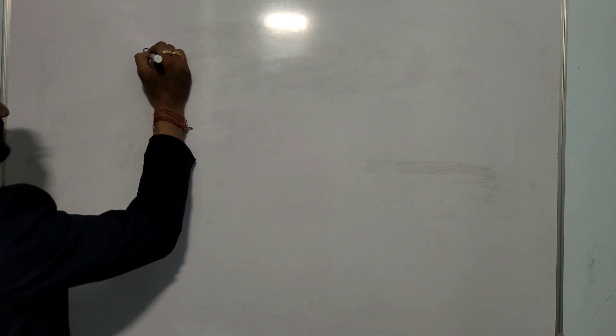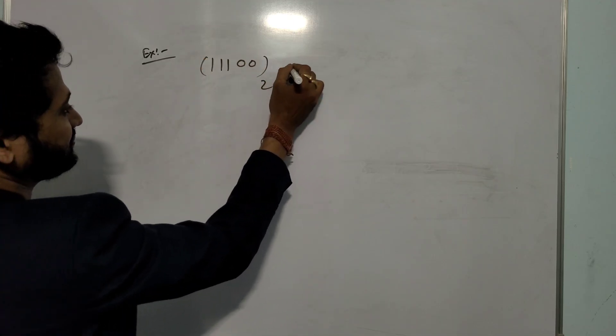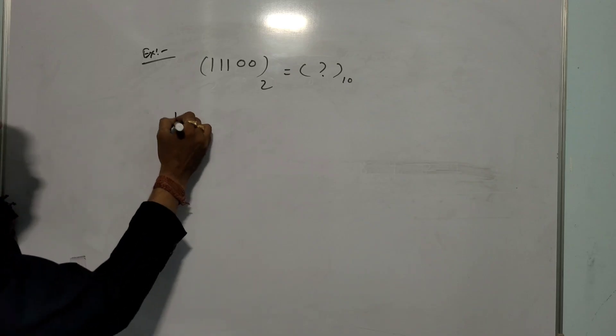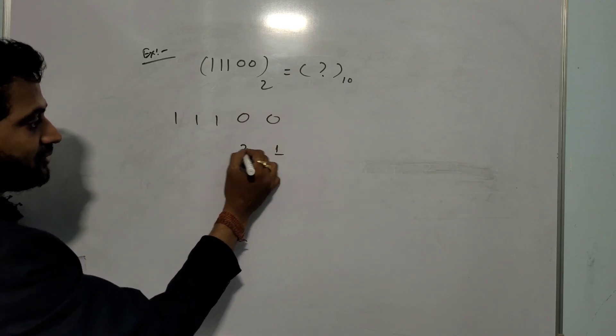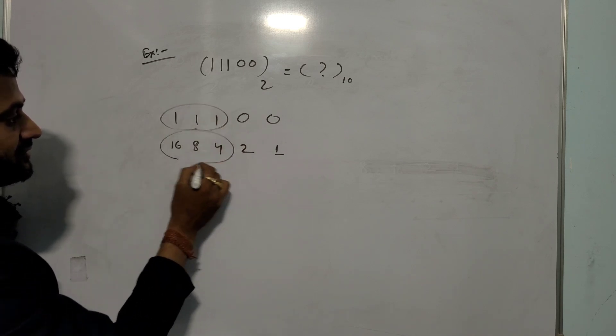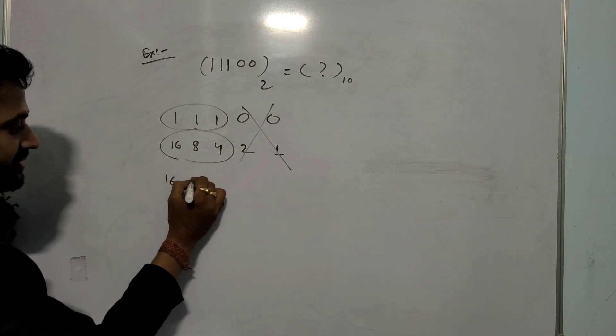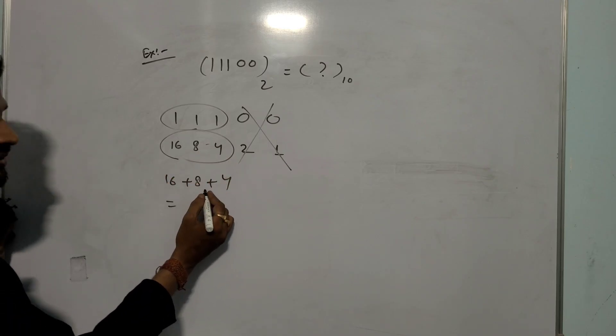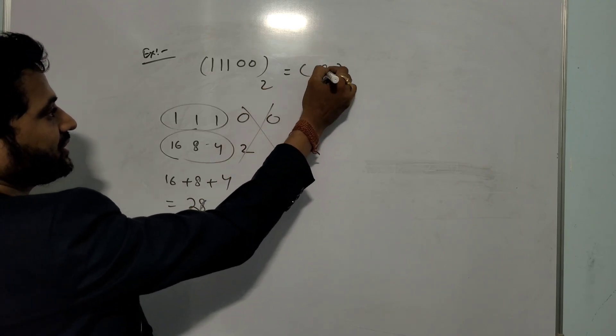Another question: triple one double zero, 11100. Write it: 11100 and we write 1, 2, 4, 8, and 16. You take this value only and cross this one. So 16 plus 8 plus 4. The answer is 28.